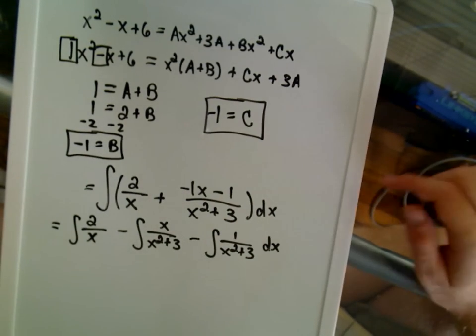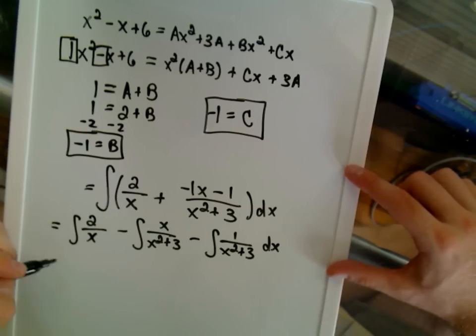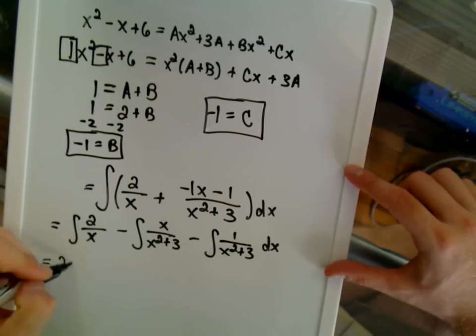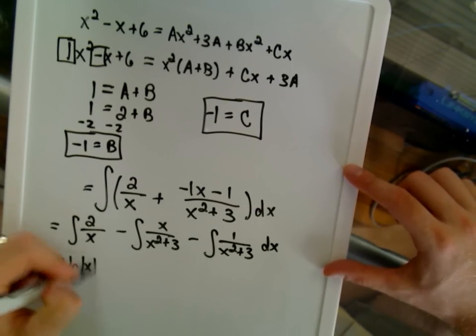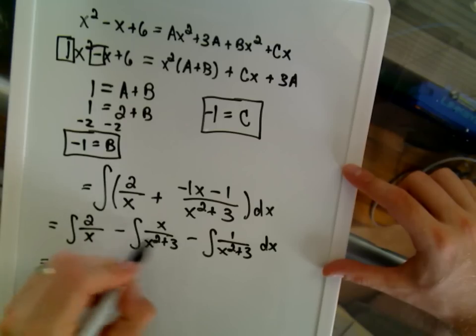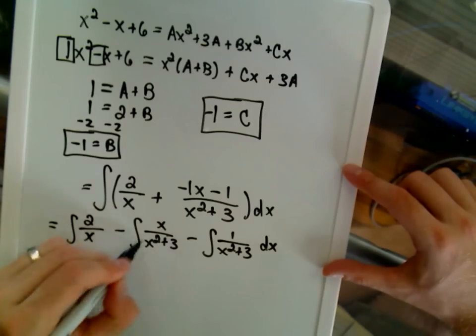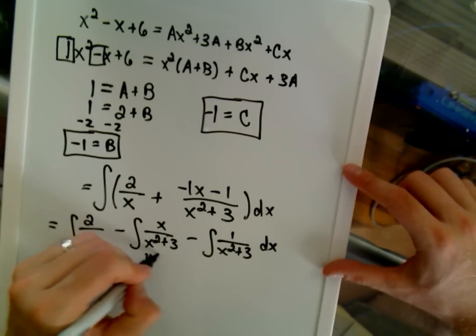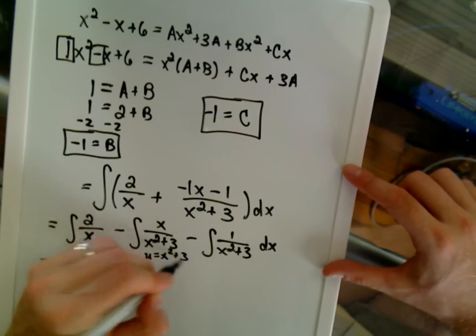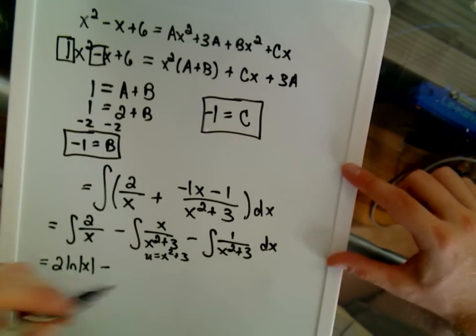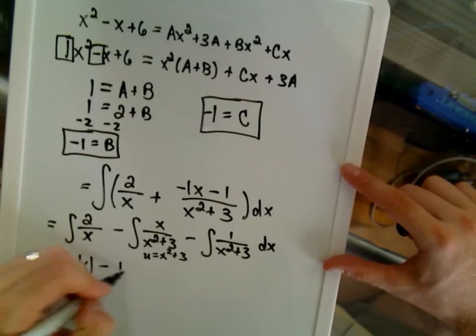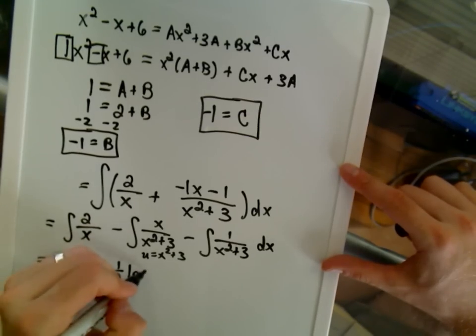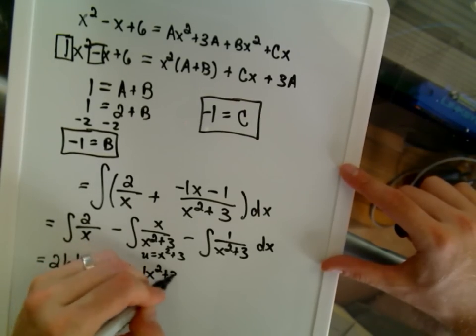And now, if you integrate each of these individually, the first one, you'll simply get 2 times the natural logarithm of x. The second part, you'll have to do a u substitution on the denominator. You'll let u equal x squared plus 3. And then you'll calculate your du. I believe if you go through all that, you should end up with a 1 half ln of x squared plus 3 term.